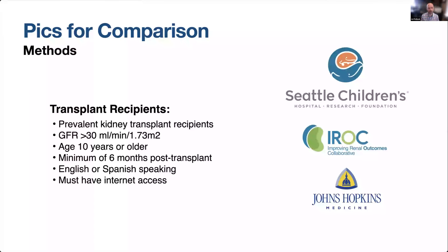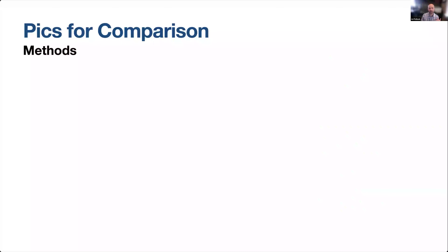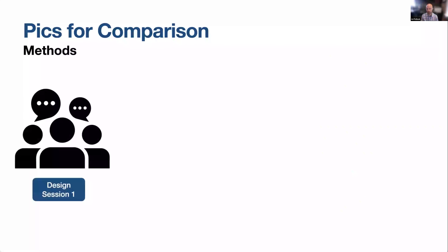We set out to recruit prevalent kidney transplant recipients with relatively well-functioning grafts. They needed to be at least 10 years old and at least six months post-transplant. We recruited both English and Spanish-speaking participants, and they needed to have internet access given that this was done during the pandemic and was all done remotely. We recruited participants at our own organization, through the Improving Renal Outcomes Collaborative, and through some colleagues at Johns Hopkins.